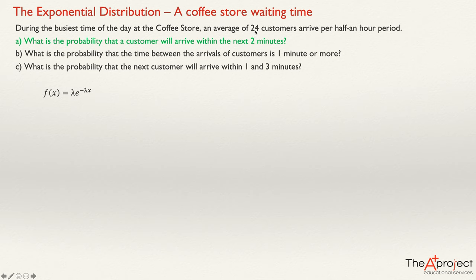There are 24 customers arriving per hour, so lambda will be 24 divided by 30 minutes, to use the same unit. That gives lambda equals 24 divided by 30, which equals 0.8. So we know the value of the parameter is 0.8.